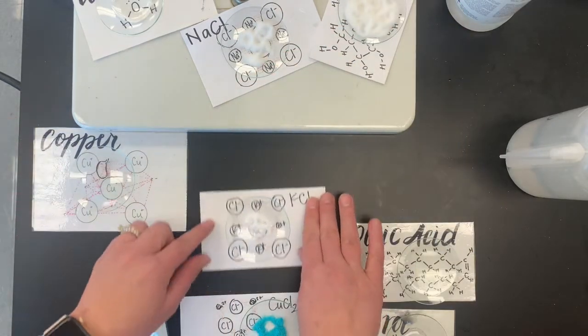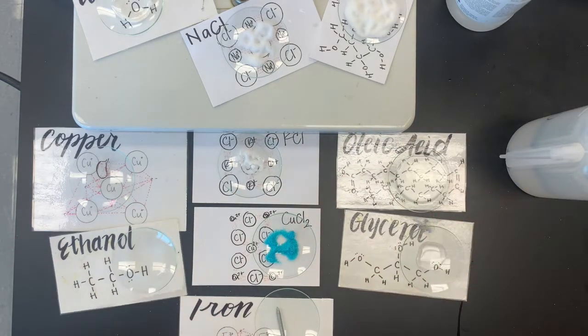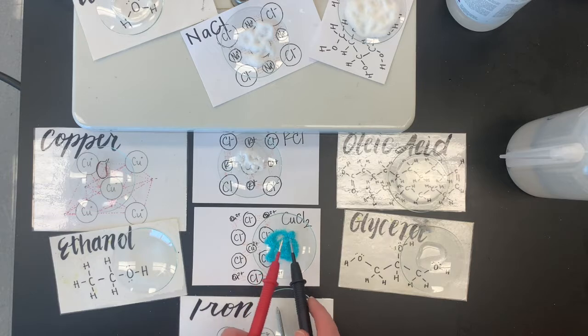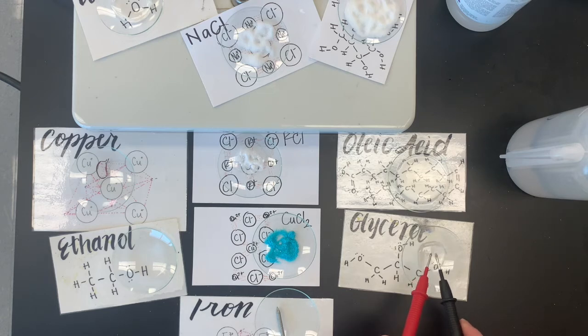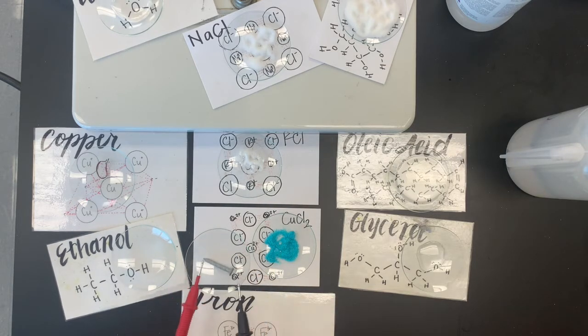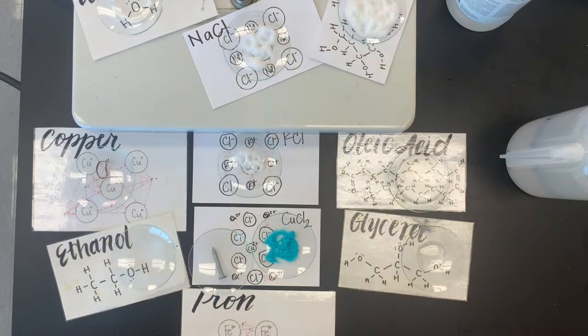So we saw the copper. So let's try our ethanol. See if it conducts. Looks like that's a no. Copper two chloride. Also a no. Glycerol. No, this is not very fun. And then iron. That's a yes, boom, boom, boom. Can you even see it? Let's make sure you can see it. So now we know what conducts as a solid and what doesn't.